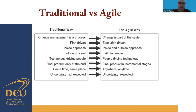In the traditional way it is an inside approach, while in agile it is an inside-and-outside approach. The traditional way puts faith in the process; in agile we believe in and trust the people more than the process. In the traditional way technology drives people, whereas in agile the goal is for people to drive the technology. In the conventional way you select technology up front, but in agile you can change your thinking as new technology or requirements emerge.